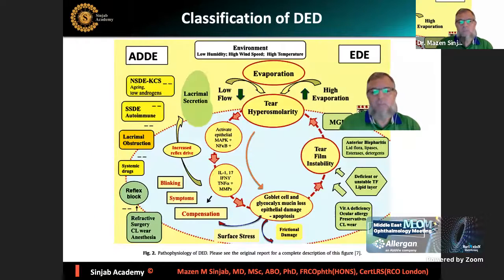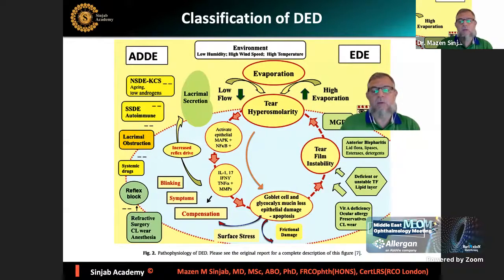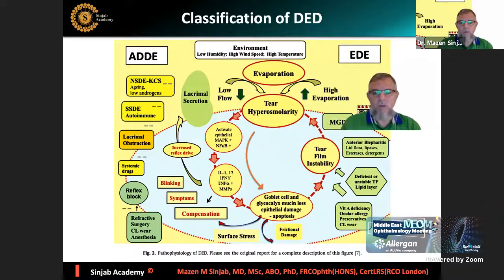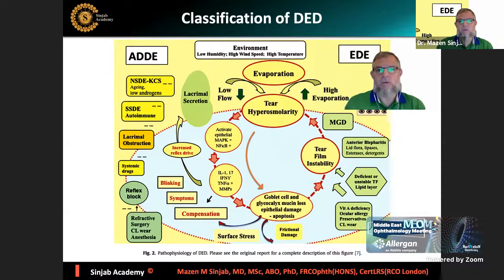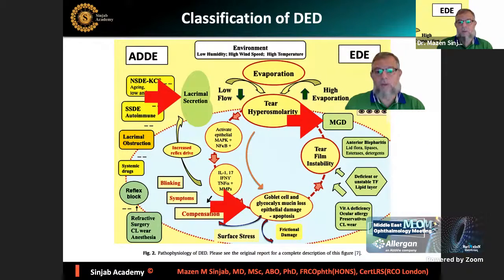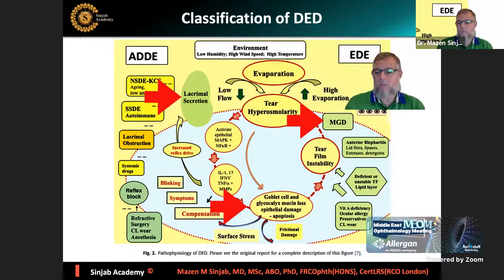The classification of dry eye disease according to TFOS DEWS2 is evaporative dry eye and aqueous deficiency dry eye, but there is no pure form of either - they are mixed. The most important components of the vicious circle of dry eye disease are the lacrimal secretions - usually low - meibomian gland dysfunction, and compromise of the goblet cells on the ocular surface.